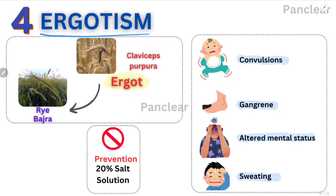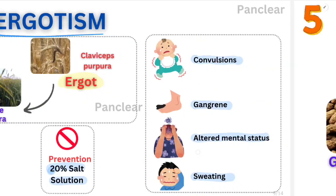By using a 20% salt solution, we can prevent ergotism — that is, prevent the growth of Claviceps purpurea. This is the fourth disease.